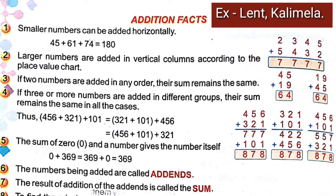In the example, the addition is set up so that 5 and 2 are both ones-place numbers, and 4 and 3 are tens-place numbers. We write in vertical columns according to the place value chart and then add.